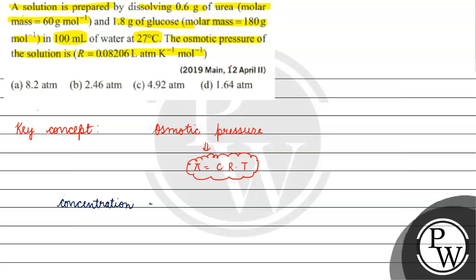We have concentration, which depends on the number of moles of the solute. We have two solutes here: urea and glucose — both are non-electrolytes. The number of moles of urea will be equal to mass of urea, which is 0.6 gram, divided by molar mass of urea, which is 60 gram per mole.